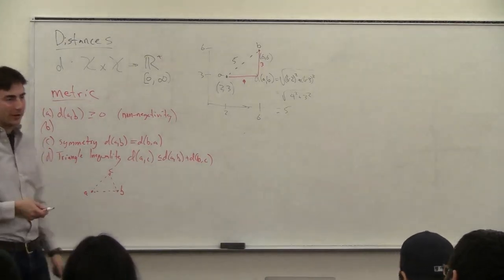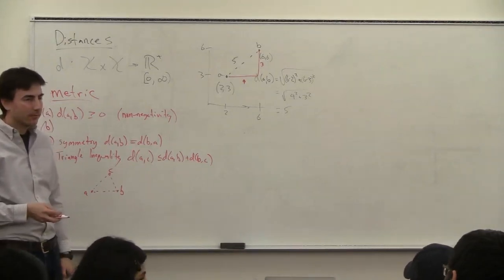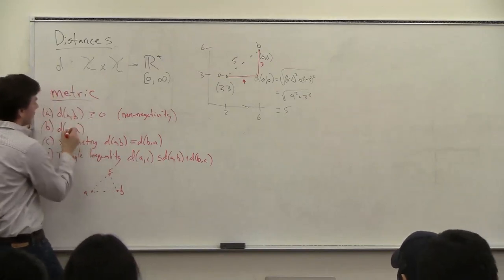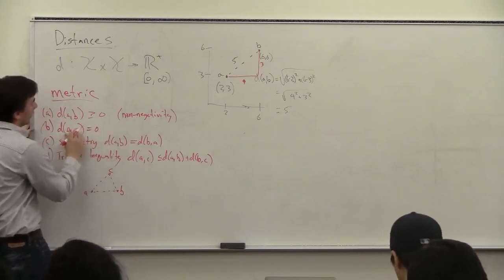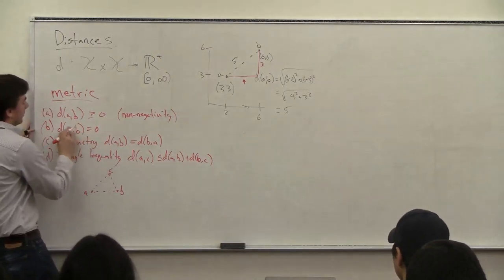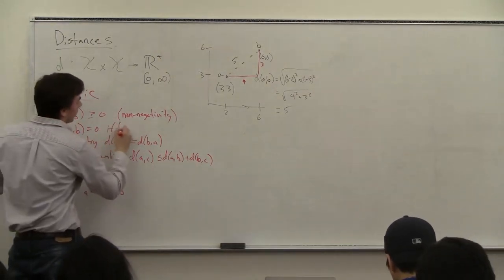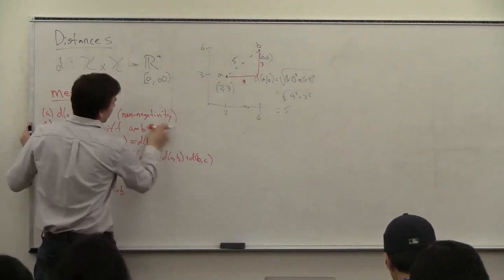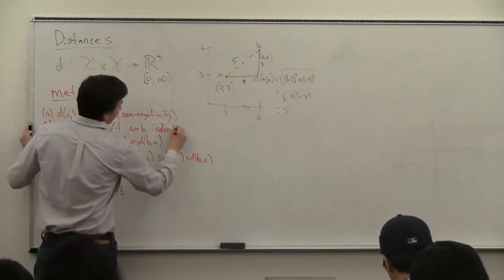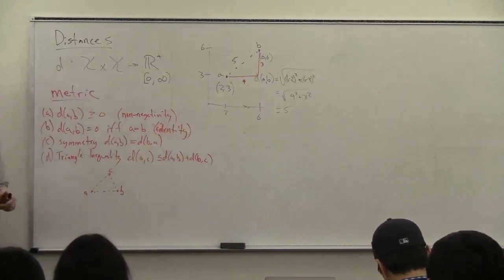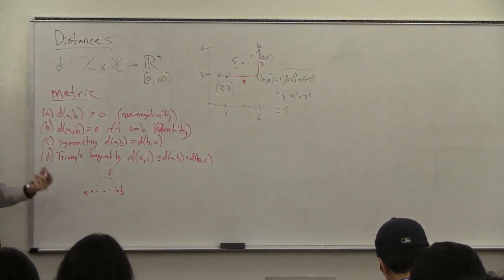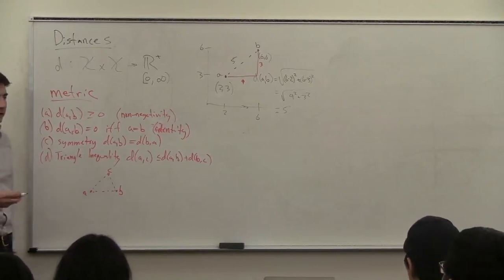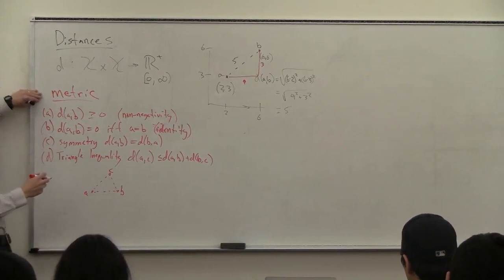The last property: D(A,B) = 0 if and only if A = B. This is called identity. A distance is only zero if you're comparing an object to itself — you can't have two different things with zero distance to each other. If it satisfies all four of these properties — non-negativity, identity, symmetry, and triangle inequality — that's called a metric.